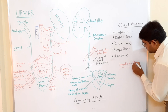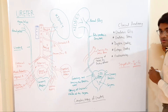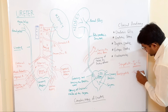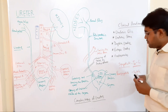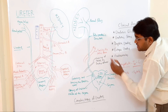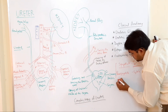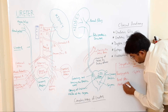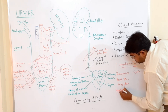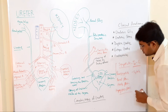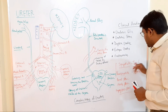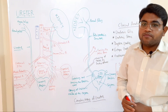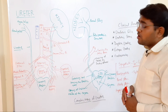Nerve supply of the ureters: sympathetic fibers come from the T10 to L1 segments and parasympathetic fibers come from S2 to S4 segments. These fibers innervate the ureter through three different plexuses — the renal plexus, the aortic plexus, and the hypogastric plexus — supplying the ureter in its different parts.